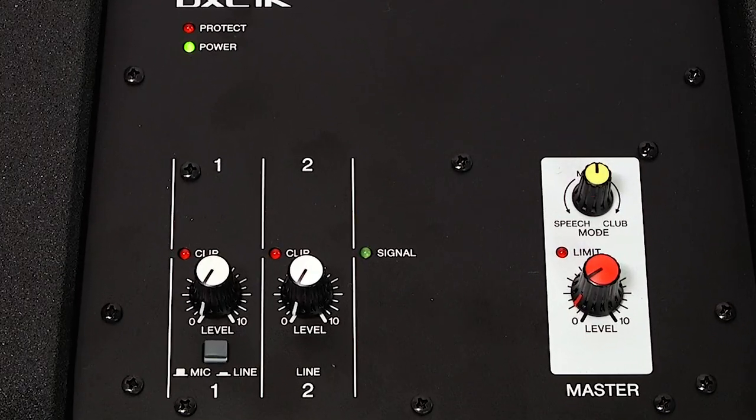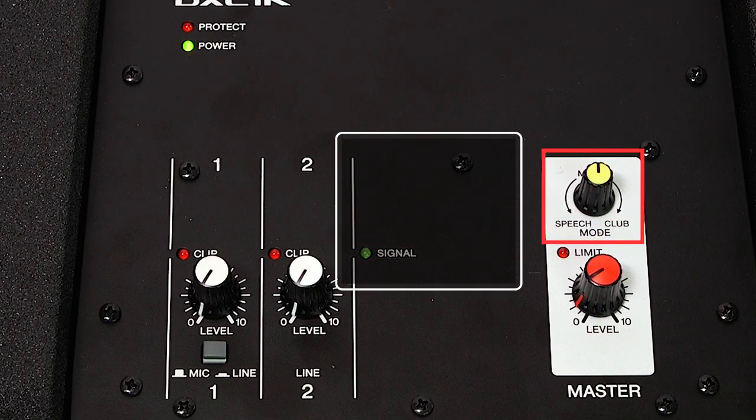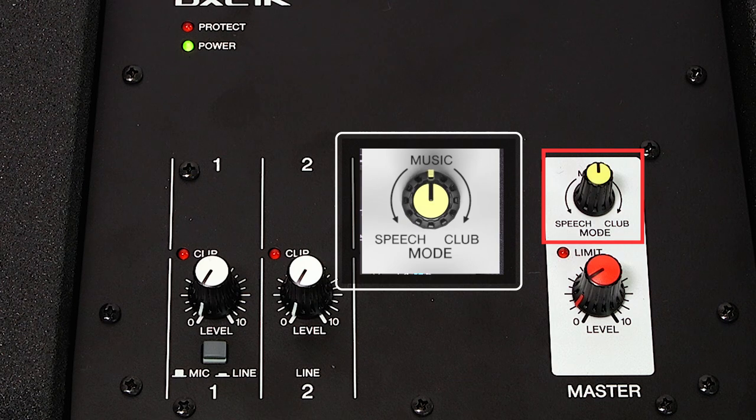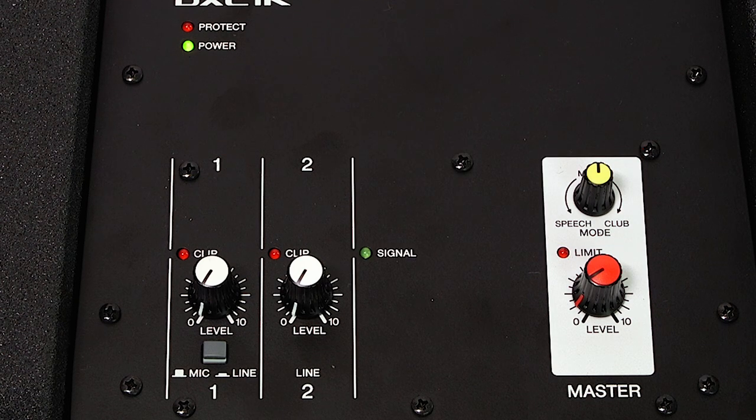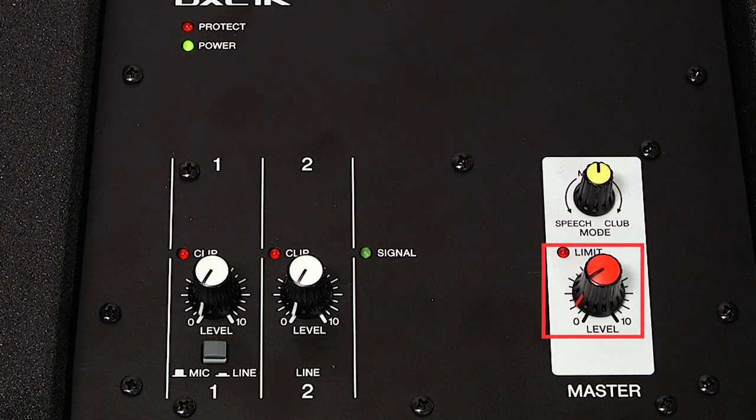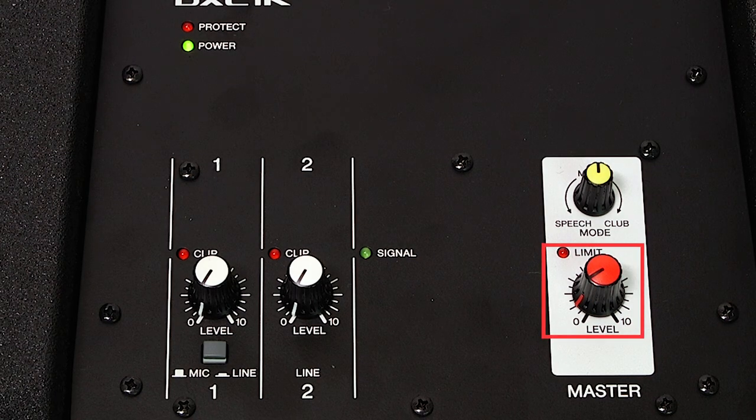Regardless of whether it's with a companion or on its own, the DXL-1K can also easily be adjusted between speech, music, or club settings using the mode knob as well as having a peak limit indicator and level knob for adjusting the overall volume.